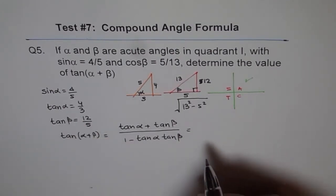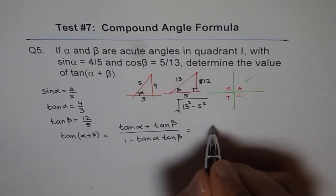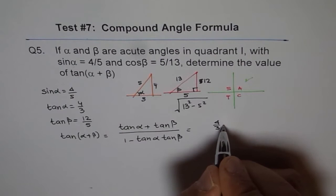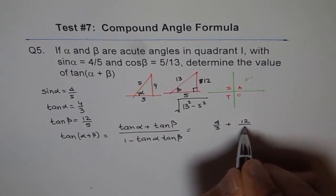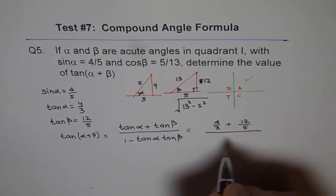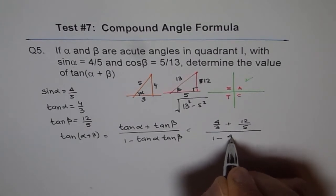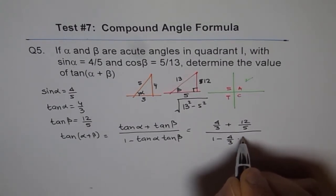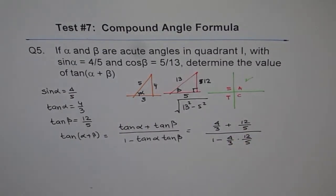Now you can plug these values and get the answer. That is 4 over 3 plus 12 over 5 divided by 1 minus 4 over 3 times 12 over 5. Okay? And then you'll get your result. Just solve this and get your answer. So that's how you're going to do it.